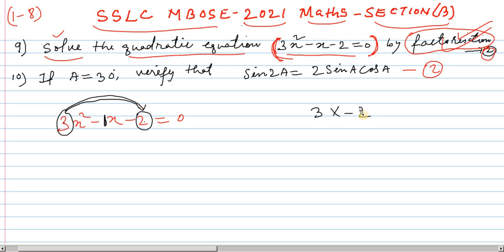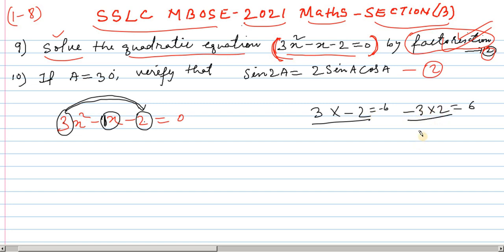3 into minus 2 — the number is the constant term. The coefficient of x is negative. Minus three into two gives minus six, and minus two plus minus three gives minus one.